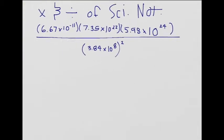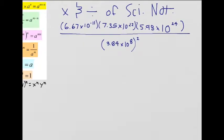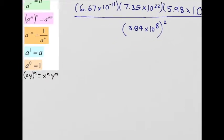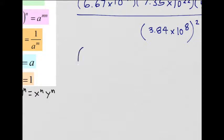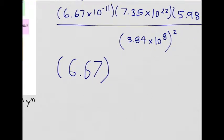Okay, first thing we do is we separate everything. That's how I like to do it. So down here, 6.67 times 7.35 times 5.98.